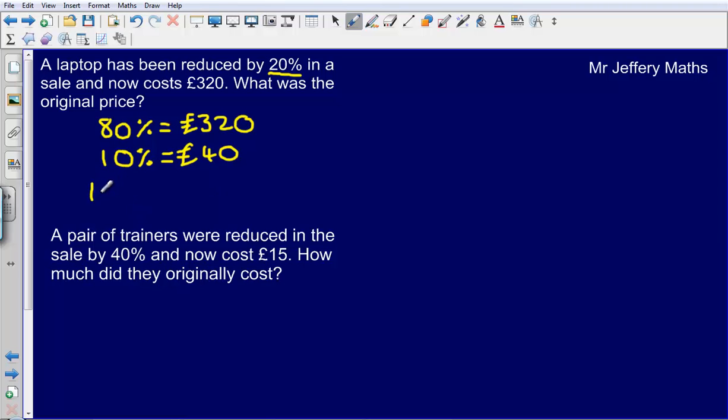So that means that if 10% is £40, that 100% must be £400. And so that there is my final answer. So the original price that I began with is £400.